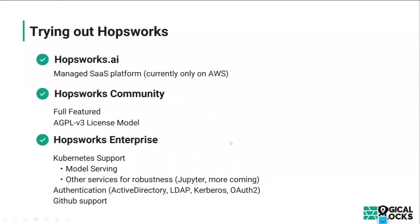You can also go to Hopsworks Community, which is the open source platform — free to use under a GPL v3 license. If you want to build a platform on top of it and sell it, you should also make your code open source. If you just want to use the platform as-is without changing it, it's free to use. Hopsworks Enterprise has integration with Kubernetes, runs notebooks there, does model serving, adds support for authentication against LDAP, OAuth2, active directory, and GitHub. All our work is on GitHub — there are over 100 notebooks there.